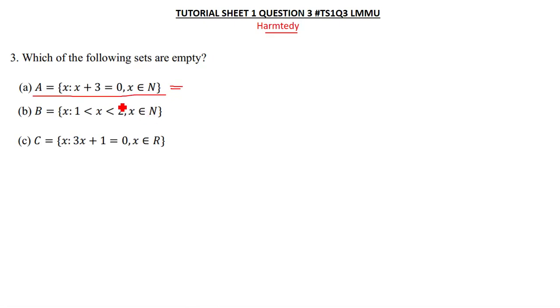Here they're saying x is a member of natural numbers. So let's try to put x there. X is a member of natural numbers. When we solve this equation here, we're going to have x plus 3 is equal to 0.